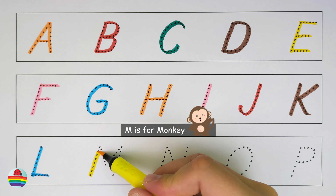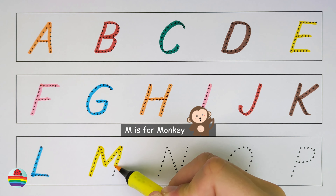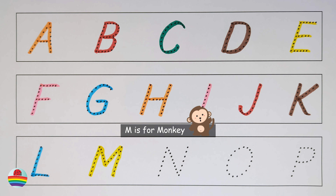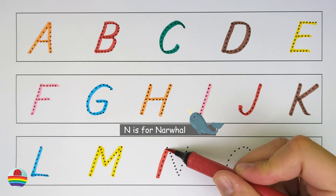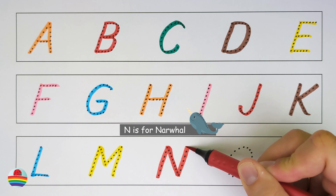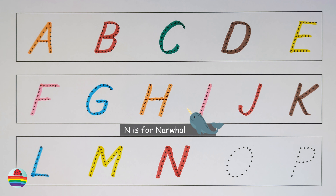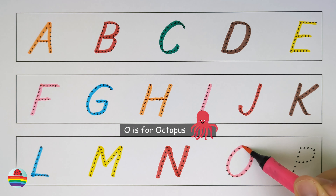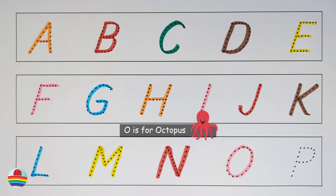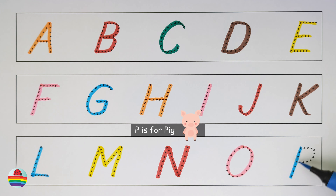M. M is for monkey. M. N. N is for narwhal. N. O. O is for octopus. O. P. P is for pig. P.